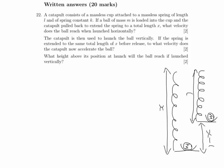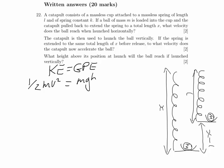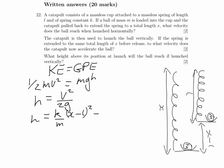In the last part of the question we need to find the height the ball reaches when fired vertically. To do that we equate the kinetic energy the ball has when it leaves the massless cup to gravitational potential energy. So half mv squared equals mgh. Rearranging, the m's cancel, giving height = v²/(2g). Substituting the expression for v squared from the last part: h = [k/m · (x − L)² − 2g(x − L)] / (2g).